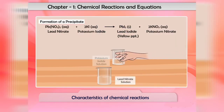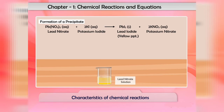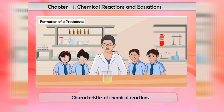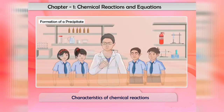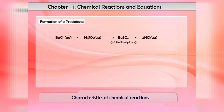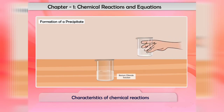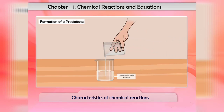When potassium iodide solution is added to a solution of lead nitrate, a yellow precipitate of lead iodide is formed. When dilute sulfuric acid is added to barium chloride solution, a white precipitate of barium sulfate is formed.